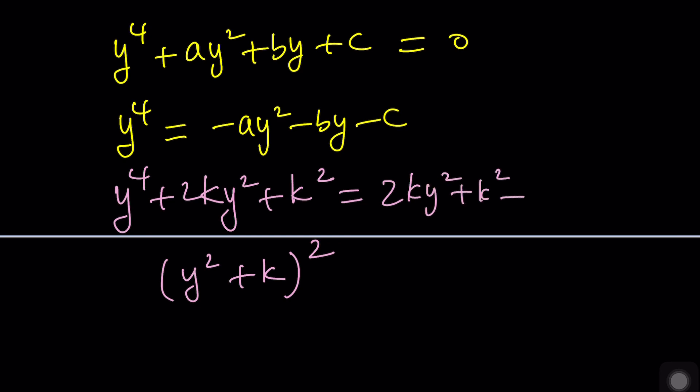you're going to get something like this. The left-hand side is a perfect square. The right-hand side, you can kind of put the coefficients together. And then, you have this. And then, finally, you have that.